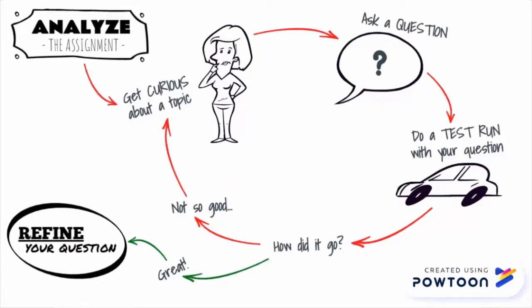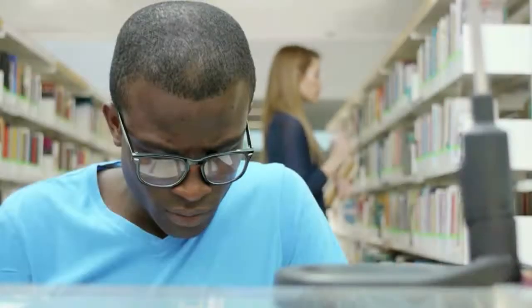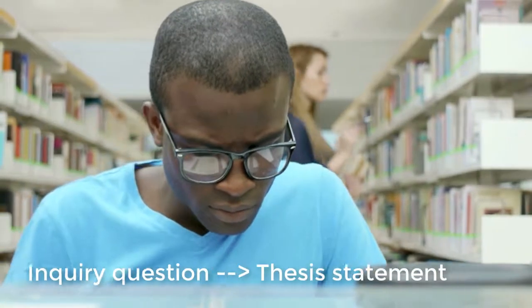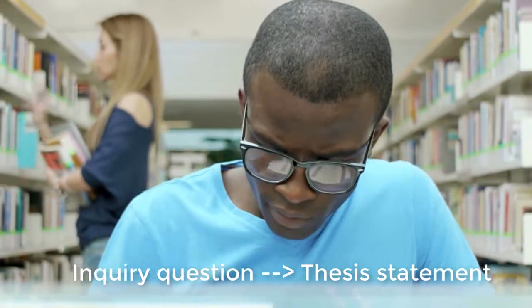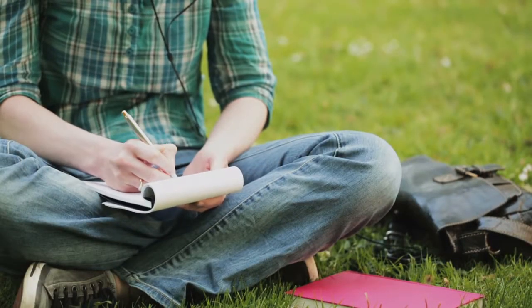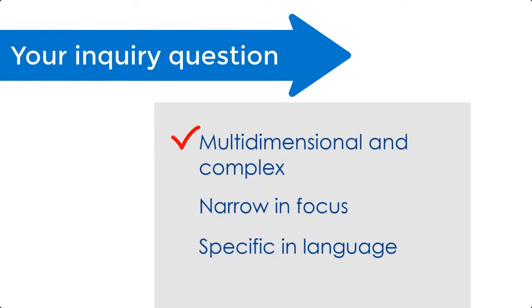If it doesn't have those characteristics, it can just be a work in progress. There's no need to have a perfect inquiry question. You keep working on it up until the point where you have that thesis statement for your paper in your final draft. But a strong inquiry question to move you through the research and writing process we're engaged in right now is going to have a few things, including being multidimensional and complex.